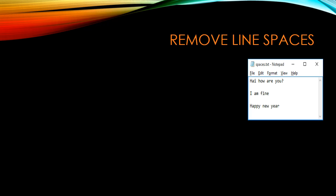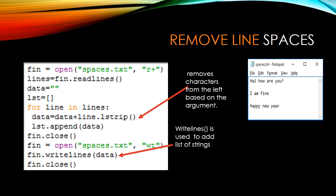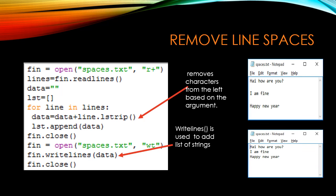Next, removing line spaces. In spaces.txt, after every sentence there is a blank line. We open the file in read mode and read the lines. We assign an empty list variable and empty string variable 'data'. Reading line by line using a for loop, the lstrip() function is used to remove leading spaces in each line. Since no argument is given to lstrip(), blank space is removed, and the result is concatenated into the data variable and appended to the list using append(). Finally, using writelines() we write the data back, and the blank line spaces are removed.